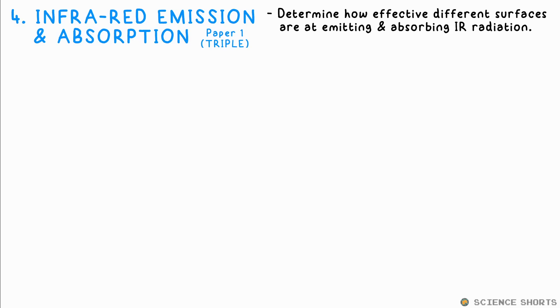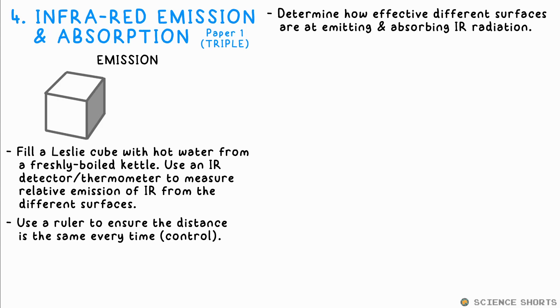Physics four, infrared absorption. Easy peasy this one. Just fill a Leslie cube with hot water from a kettle. It's got different surfaces on its four sides. Using an infrared detector or infrared thermometer, we can detect how much heat is radiated from each side. You'll find matte black is the best emitter of infrared, whereas shiny silvery surfaces are the worst.